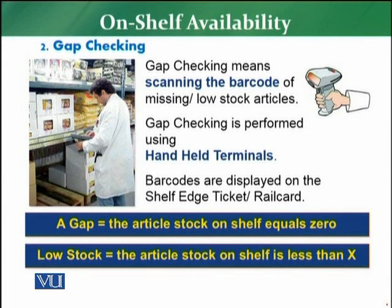Gap check means scanning the barcodes of missing or low stock articles — two types: articles that are not available at all, and articles that are in low stock. You have to do this gap checking through HSDs — handheld devices. Normally in a retail store, the store has these HSDs and they are used for gap checking.